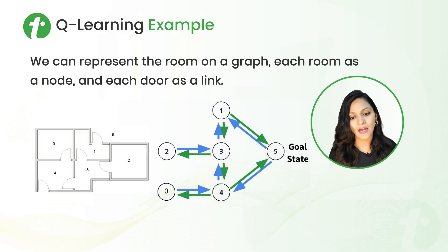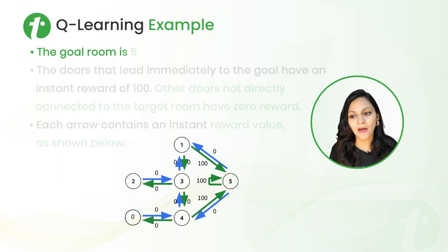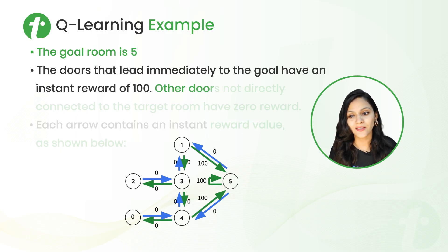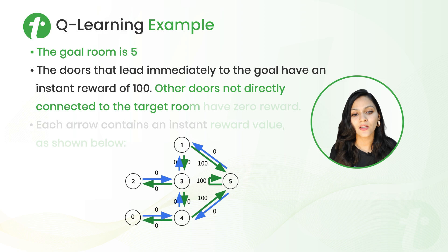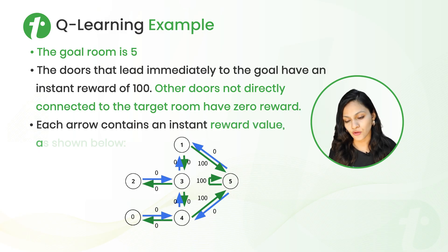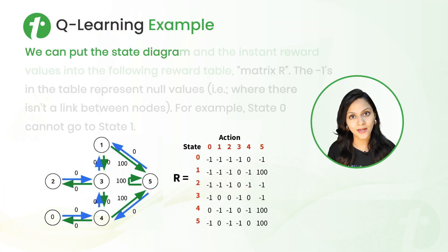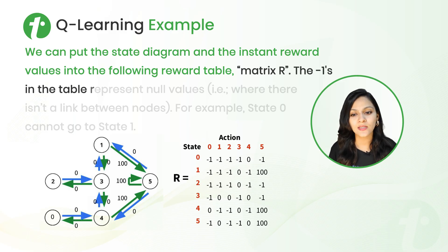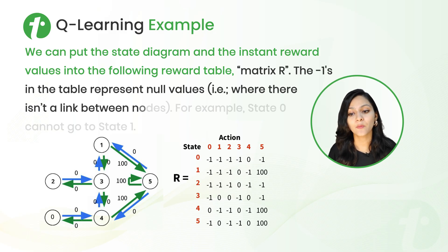Here we have room five as the goal state — that means we have to get into room five. The doors that lead immediately to the goal have an instant reward of 100. Other doors not directly connected to the target have zero reward. Each arrow contains an instant reward value as shown in this graph. We can put the state diagram and the instant reward values into matrix R.